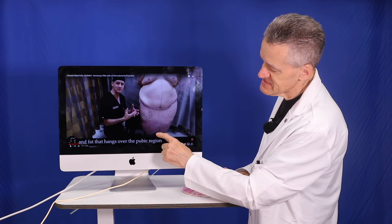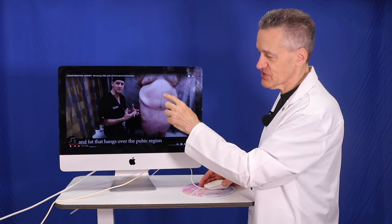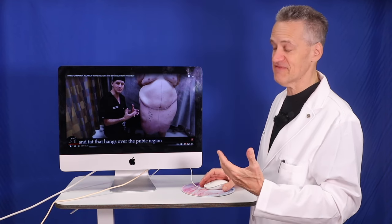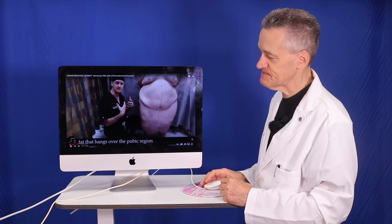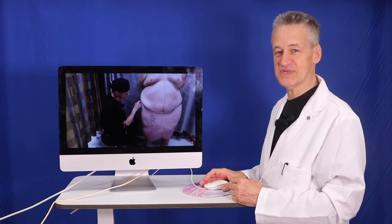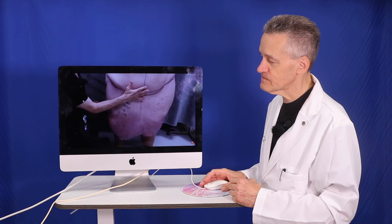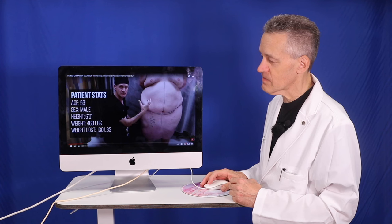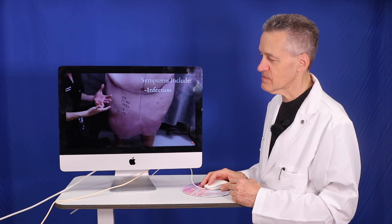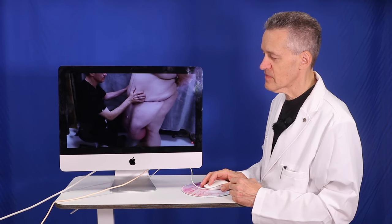In the lower portion of his abdominal pannus, all that blood would go down, get trapped, would have a very difficult time getting back into the circulation, and would cause chronic skin conditions, inflammation, and even abscesses and infections. Today we're doing a paniculectomy. Just think how hard getting out of bed was for him.